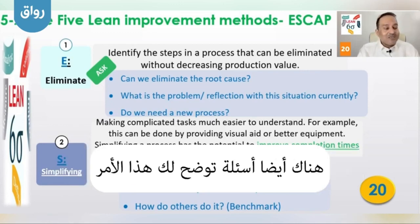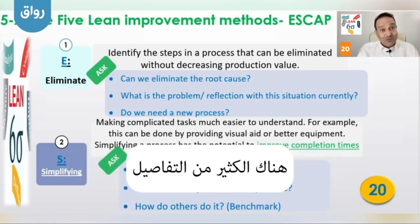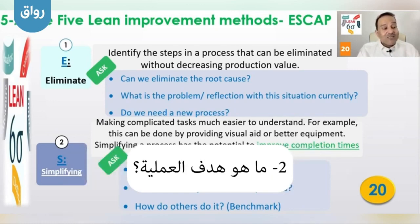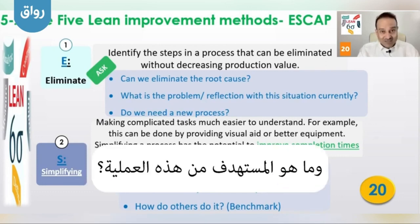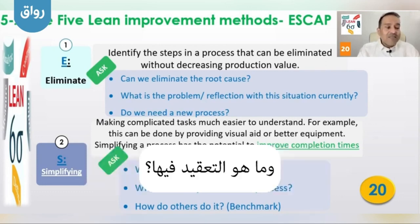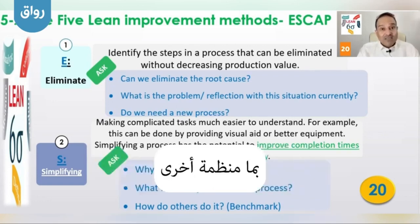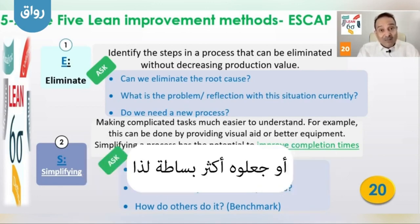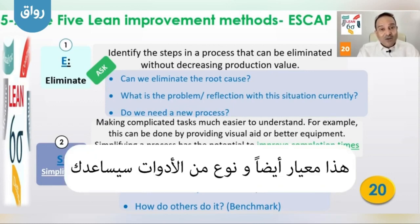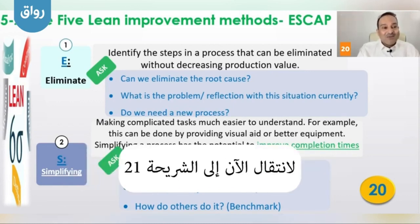There are also guiding questions for this issue. First, why do we need these details? There may be too many details — do we really need them? Second, what is the objective of the process? We check why we put it there and what the objective of this complicated process is. The last one: how do others do it? Benchmark — check what other organizations do with the same process, and whether they make it simpler. So benchmarking is also a kind of tool that will help you. We will now move to slide 21.